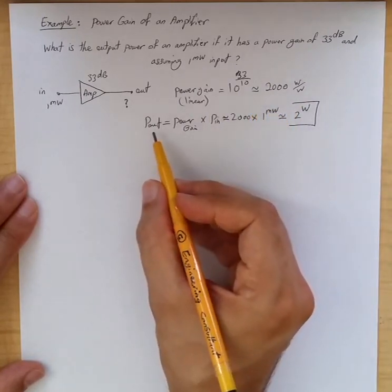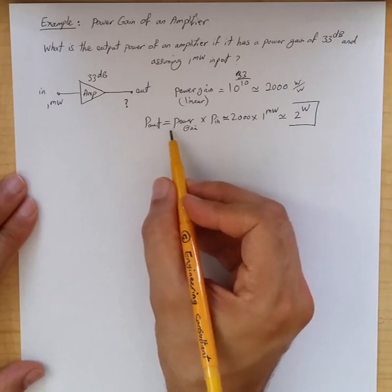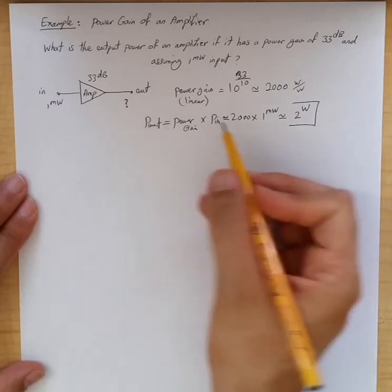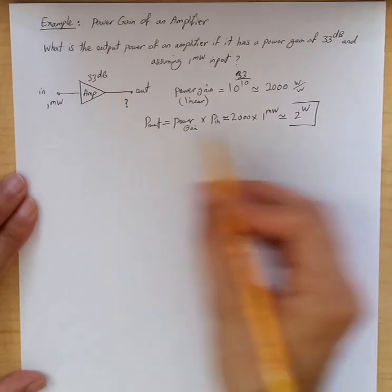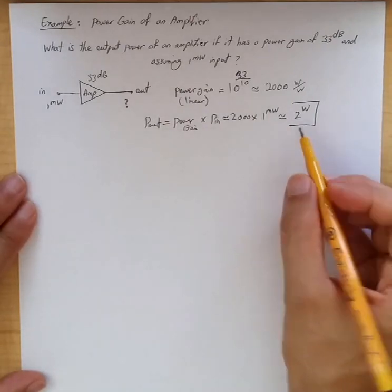So to find out the output power, we just say Pout is equal to power gain times Pin, and that's 2,000 times 1 mW, so it becomes 2,000 mW or 2 W.